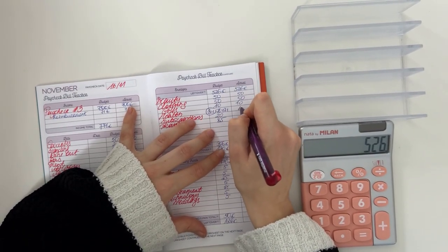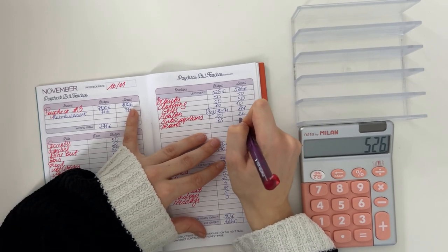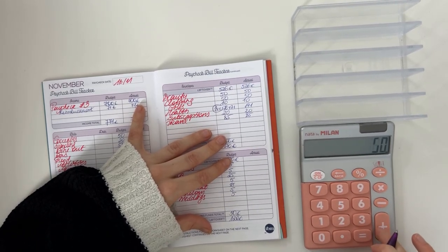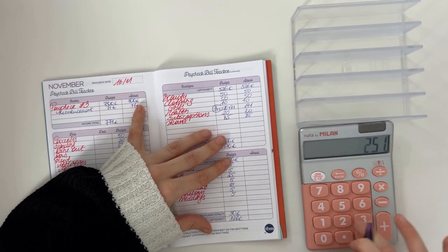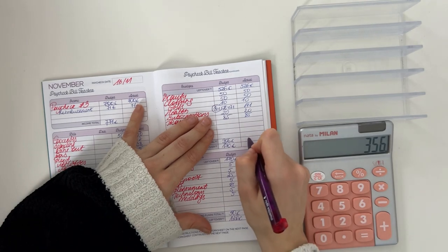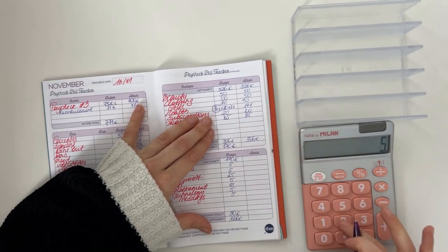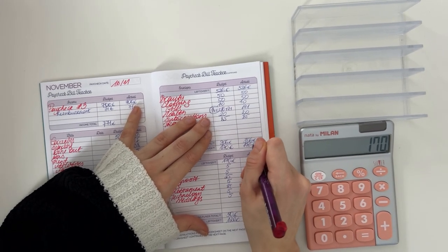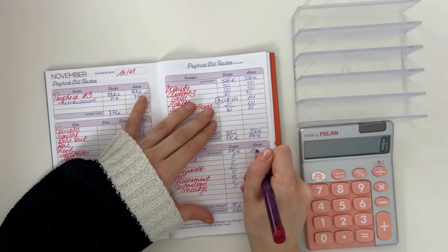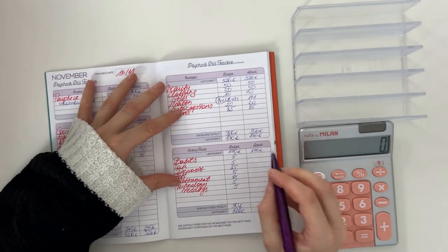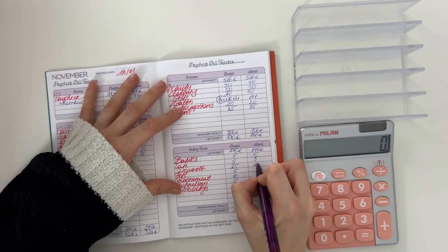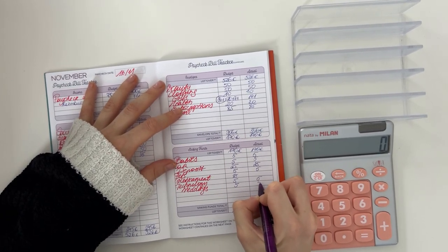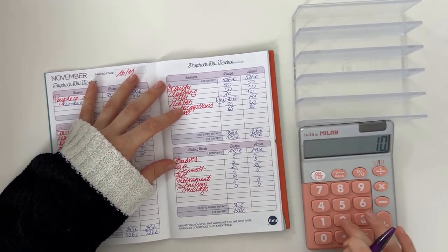So 526 minus 356 was 170. We're bringing that down here to long-term sinking funds. Babies got 5, car got 5, deposit got 25, pets got 5, technology and weddings each got a 5. So that was in total 50 euros. So 170 minus 50 is 120, and all that 120 went into our savings challenges. Perfect. That closes out the third week.